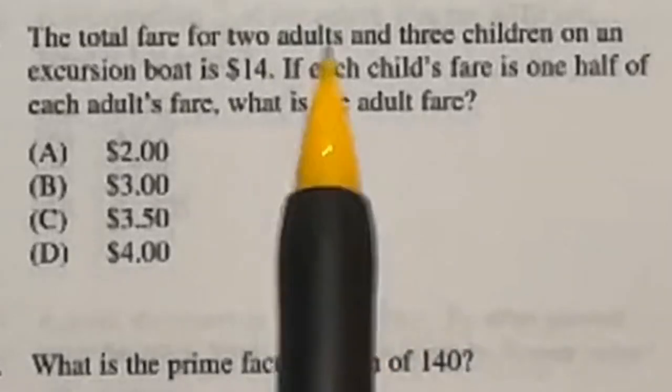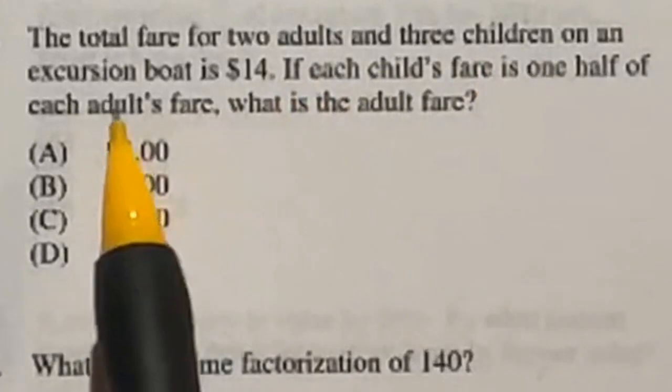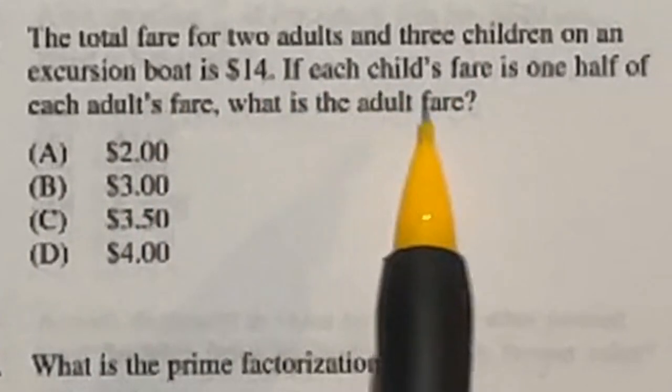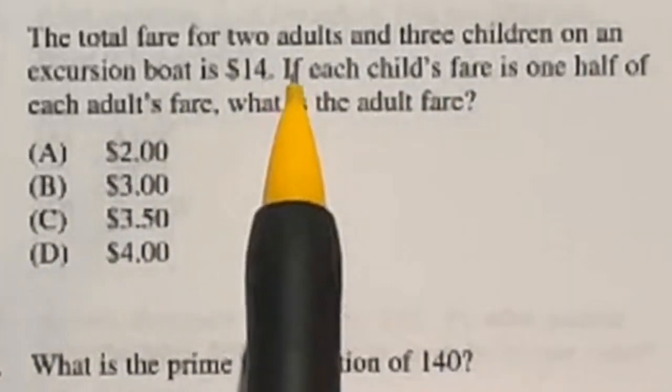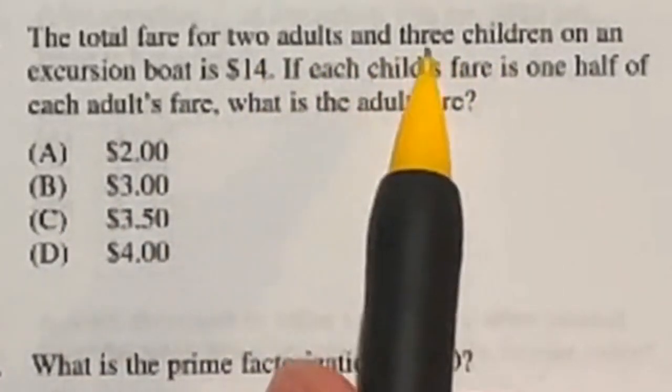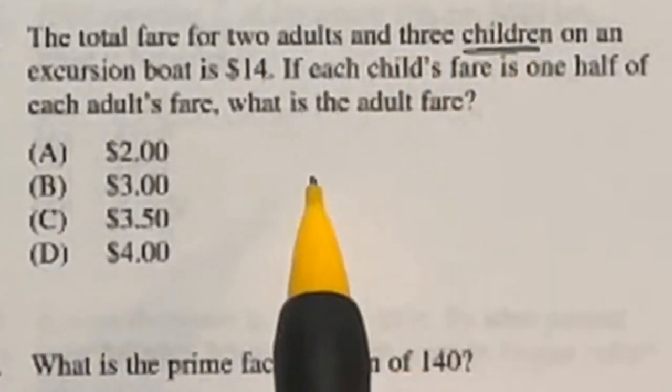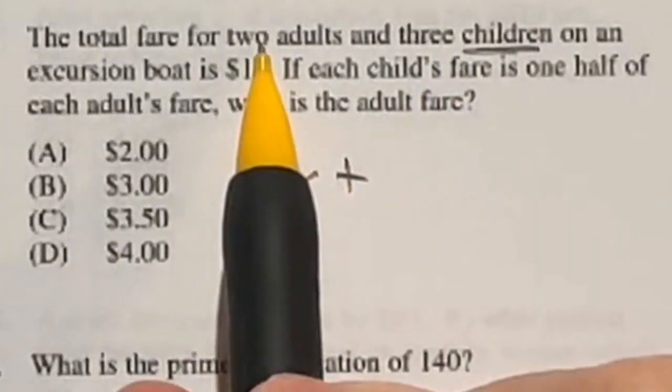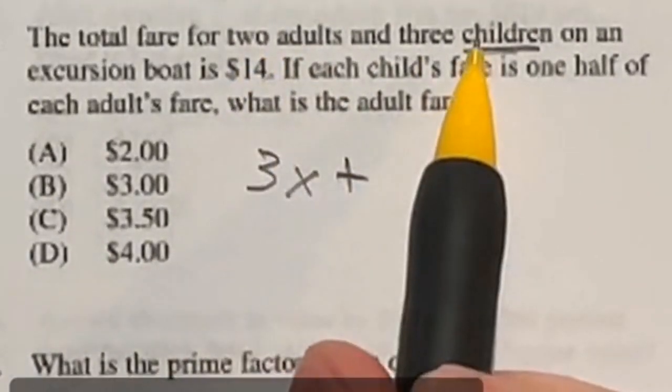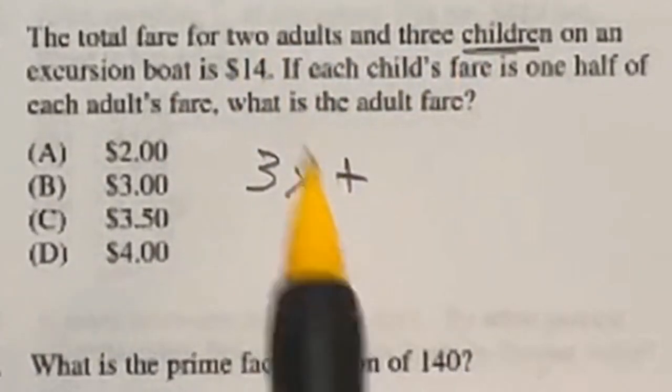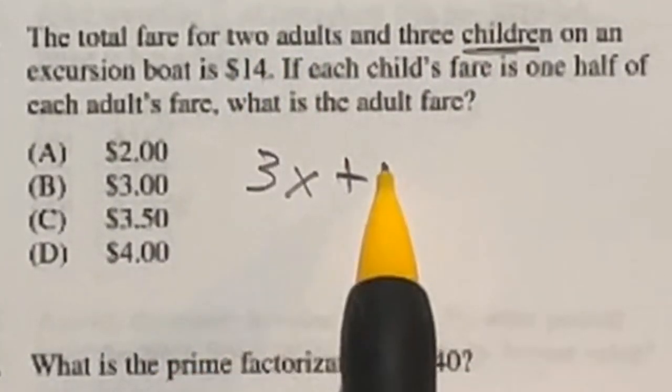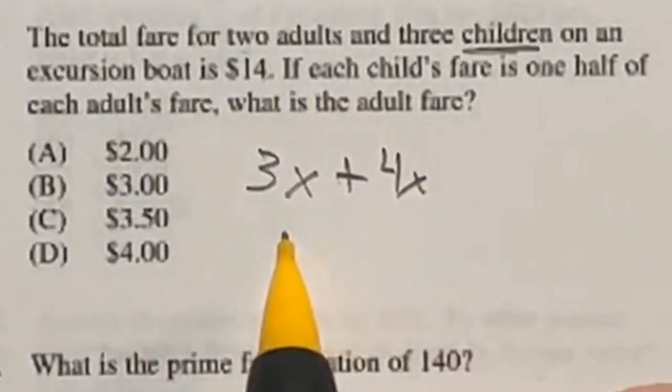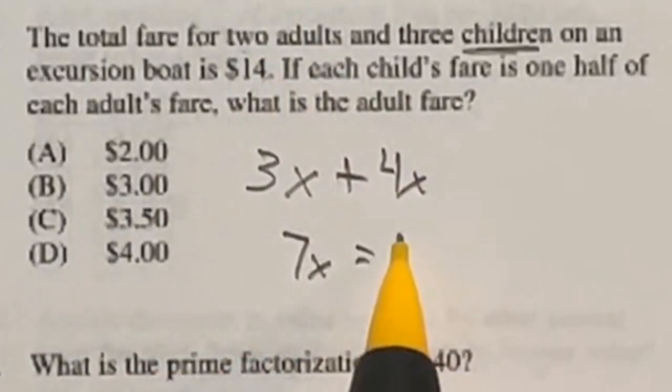So it says the total fare for two adults and three children for an excursion boat is $14. And it says children are one half the price of adults. So what's an adult fare? So the way I'm going to do this is breaking down using a variable X. I'm going to say that a child's ticket is X. That means that we have three children, so that would be three, plus two adults. Now remember, these are double what those are because they're half of that. So that means that for each one of these, it would count as two X's. So in this case, that means we have 4X because we have two adults. That means we have a total of 7X, and that's equal to $14.